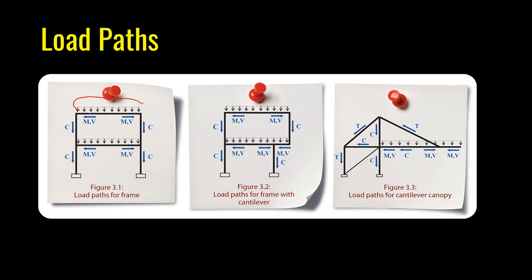In a frame with a distributed load, the load causes shear and moment in the beam. The load is then transferred to the columns as a compressive load. The lower column carries load from the column above as well as from the beam, and finally all load is transferred to the foundation.